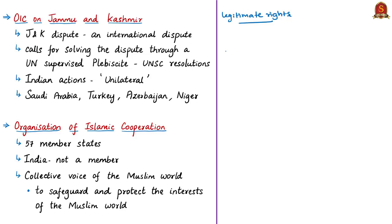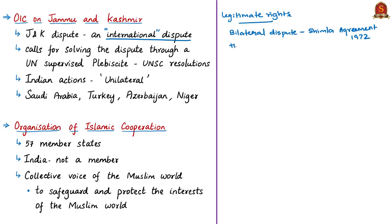According to OIC, the Jammu and Kashmir dispute is an international dispute; but according to India, it is a bilateral dispute between India and Pakistan as per the Shimla Agreement of 1972. When a matter is internationalized it requires third-party mediation, whereas a bilateral dispute means both countries mutually solve the matter through peaceful dialogues.